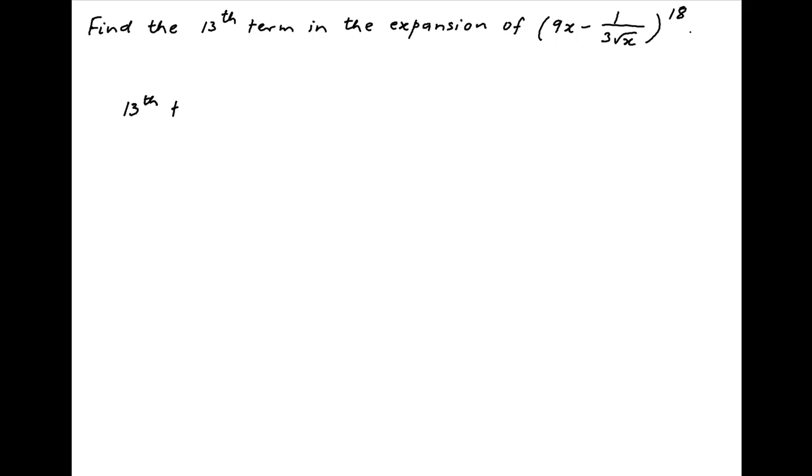The thirteenth term in the binomial expansion of the given expression is equal to 18 choose 12 multiplied by 9x raised to the power 18 minus 12, multiplied by minus 1 upon 3 root x raised to the power 12.